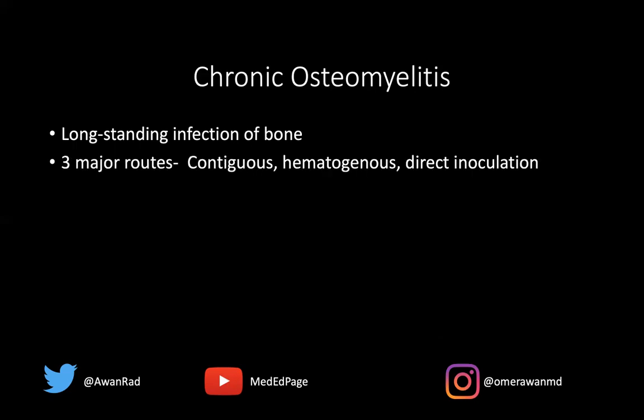There are three major routes to get osteomyelitis: contiguous, hematogenous, and direct inoculation. Contiguous is by far the most common route — I tell residents and fellows to think about this as going out to in. It often starts as an ulcer at the skin surface, then results in cellulitis or infection of the subcutaneous tissues. You may then get myositis, fasciitis, and eventually the infection goes to the level of the periosteum as periosteitis, then the cortex as osteitis, and finally into the marrow as osteomyelitis. So it starts at the skin surface and goes to the bone marrow — that's out to in, or contiguous spread.